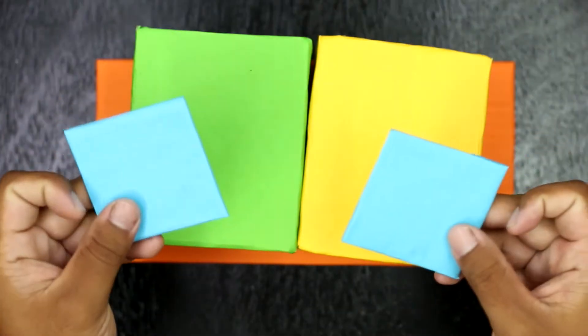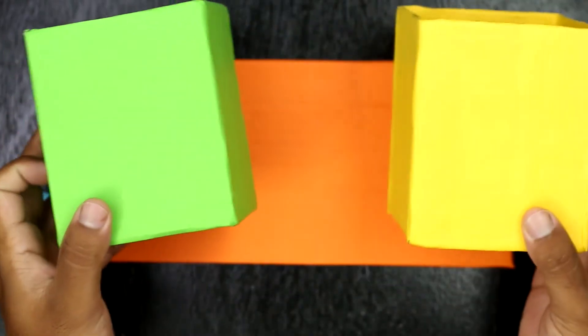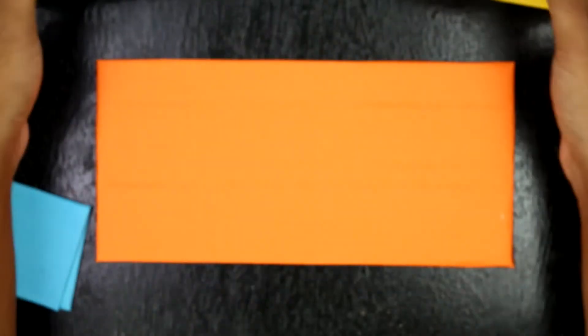For middle cardboard, I have used blue color, and for the base, I have used an orange theme.